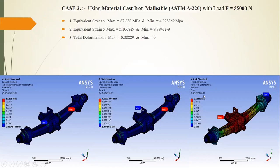For Case 2, malleable cast iron ASTM A220 with 55,000 N load and 5,000 N at the dome: the maximum equivalent stress is 87.838 MPa and the minimum is 4.98×10⁻⁹ MPa. The maximum strain is 5.50×10⁻⁹ and minimum is 9.79×10⁻⁹. The total deformation is 0.288 mm with a minimum of zero.